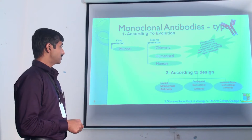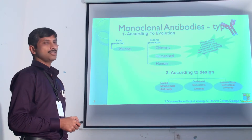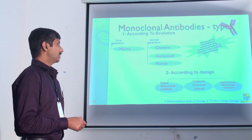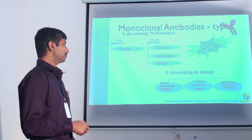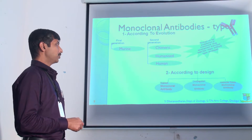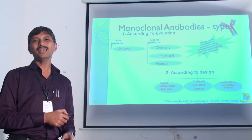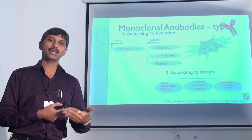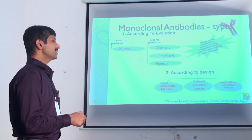According to the design, antibodies are divided into three types: naked monoclonal antibody, conjugated monoclonal antibody, and immunotoxin monoclonal antibody. Naked monoclonal antibody does not have any attachment or carrier — no conjugated protein or radioactive chemicals — it is a direct monoclonal antibody with no side effects.